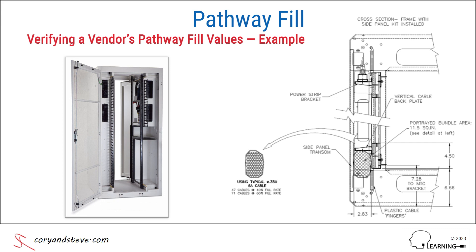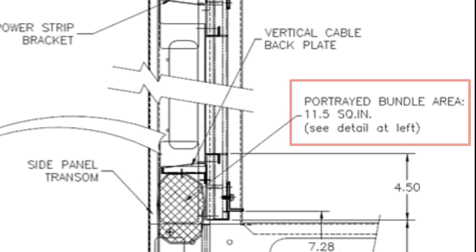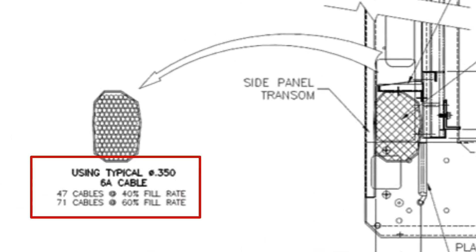As highlighted here, this vendor is giving us an 11.5 square inch pathway area and is stating that up to 47 cables with an outside diameter of 0.35 inches can be placed in the pathway at a 40% fill ratio.